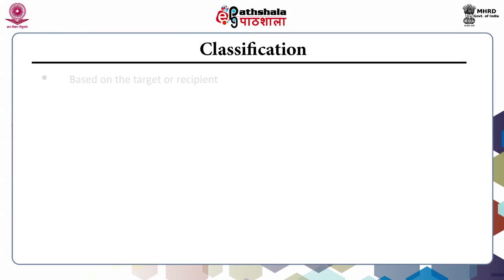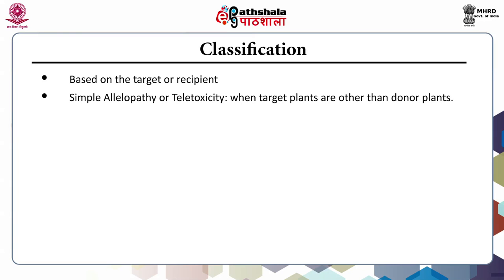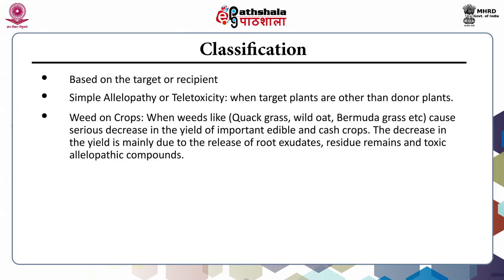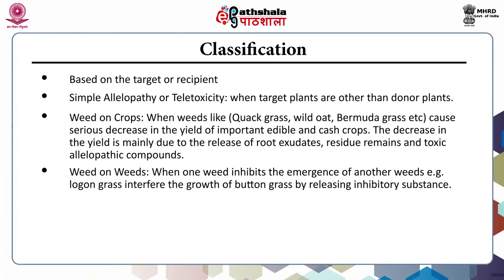Classification based on the target or recipient: the first category is simple allelopathy or tele-toxicity, when target plants are other than the donor plants. This includes weed on crops, where weeds like quack grass, wild oat and bermuda grass cause serious decrease in the yield of important edible and cash crops, mainly due to the release of root exudates, residue remains and toxic allelopathic compounds. Second is weed on weed, when one weed inhibits the emergence of another; for example, logon grass interferes with the growth of button grass by releasing inhibitory substances.